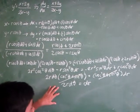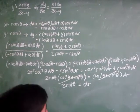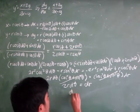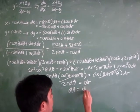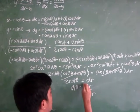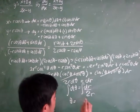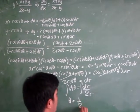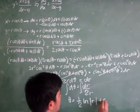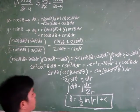As you can see, this became a separable differential equation. Solving it, we have d theta equal to dr over 2r. Integrating both sides, we get theta equal to one-half ln of the absolute value of r plus C. This is now your general solution.